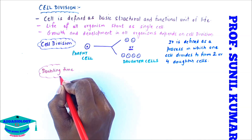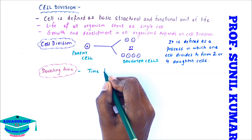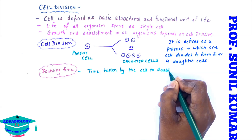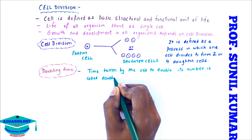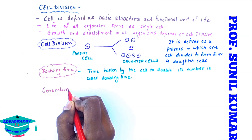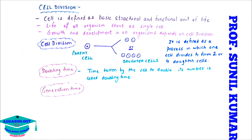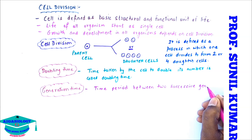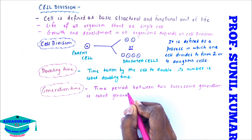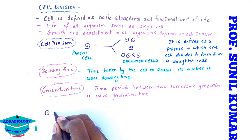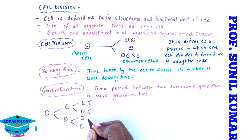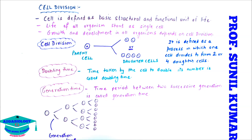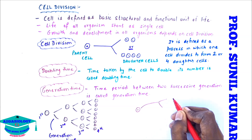Every cell needs some time to double its number. The time taken by the cell to double its number is called doubling time. Every time a new cell is born, there is always a generation. The time between two successive generations is called generation time. For example: one cell divides to form two, two to four, four to eight, eight to sixteen — these are successive generations. Generally, generation time and doubling time are the same.